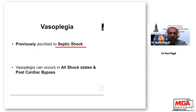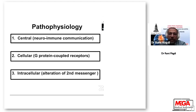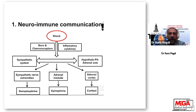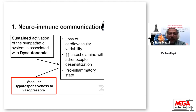Vasopressia was previously ascribed to septic shock; however, it occurs in all shock states and post-cardiac bypass. Its pathophysiology has three elements: central, through neuroimmune communication; cellular, through G-protein coupled receptors; and intracellular, through alteration of second messenger pathways. When shock occurs, through baro- and chemoreceptors and inflammatory cytokines, the sympathetic system and hypothalamo-pituitary-adrenal axis are stimulated. Norepinephrine is released from sympathetic nerve terminals, epinephrine from the adrenal medulla, and cortisol from the adrenal cortex. Sustained activation leads to dysautonomia, with loss of cardiovascular variability, increased catecholamines with adrenoreceptor desensitization, and a pro-inflammatory state — resulting in vascular hyporesponsiveness to vasopressors.